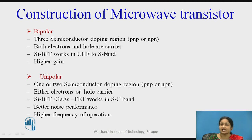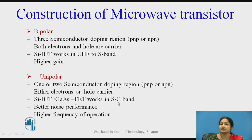In bipolar, both electrons and holes are the carriers, while in unipolar, either electron or hole is the carrier. Silicon BJT works at very high frequency up to the S-band, and the silicon BJT or gallium arsenide FET works in the S to C band, which are the ranges of microwave frequencies. The bipolar device has higher gain, while the unipolar device has better noise performance and can operate at a higher frequency.